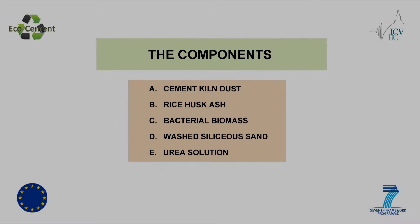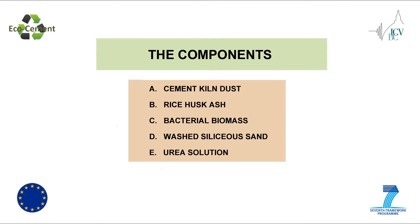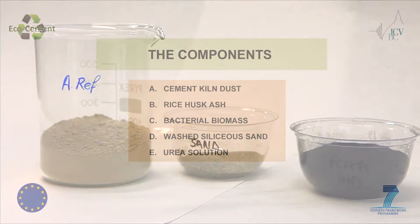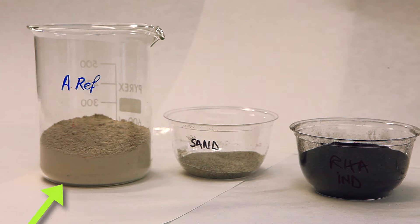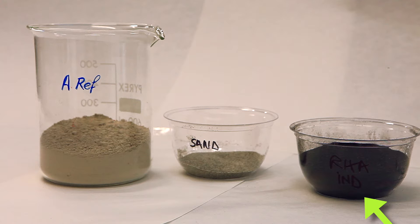In the Eco-cement, we do not have just a binder as in ordinary Portland cement, but a mixture of different components. Lime components present in the cement can thus be collected from the bypass filter of the cement production line. A pozzolanic additive is included due to the silica present in the rice ash.